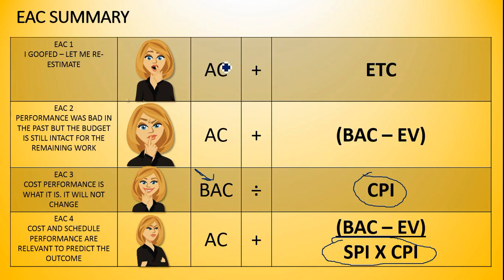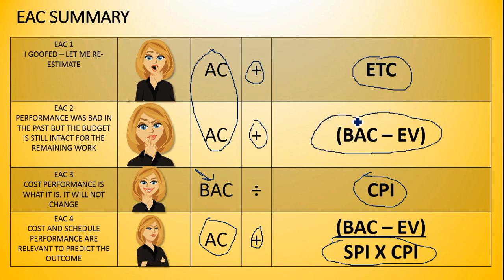Again, take a look. Except for one, they all start with AC. They all, except for one, have that plus. And what are they adding in three out of the four? They're adding the estimate to complete. But the estimate to complete is reflected in different ways. In this second one, this is the estimate to complete. If we know our budget and the work done, we can find the ETC if the budget is still intact. And in cases where we want to factor in the cumulative SPI and CPI, then we just use that as the denominator. All right? So I hope that helps.